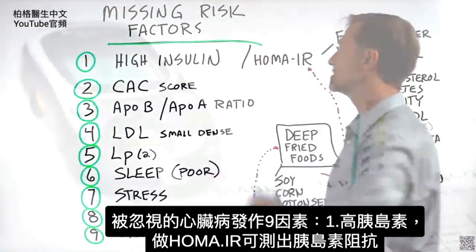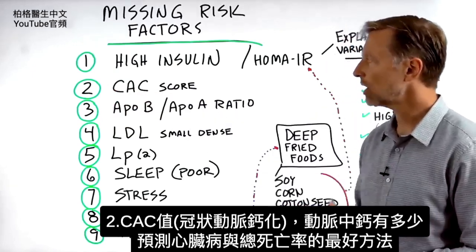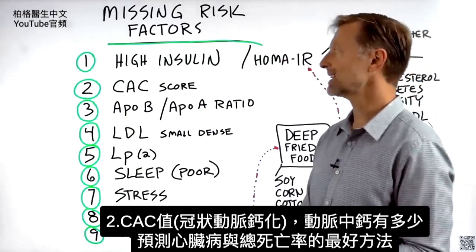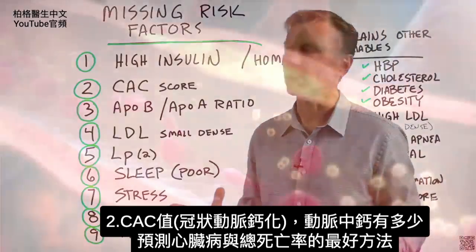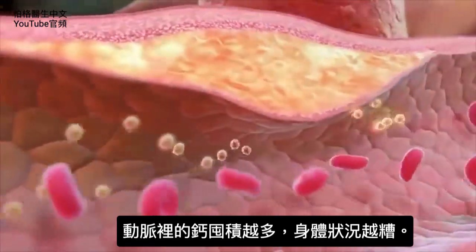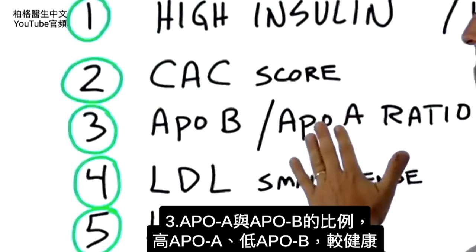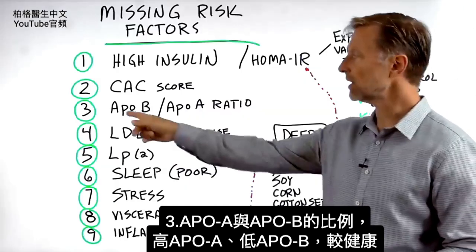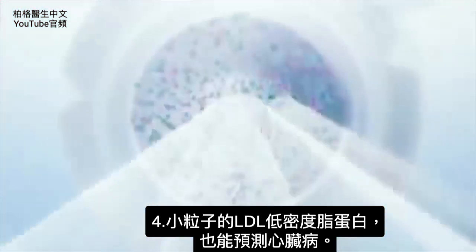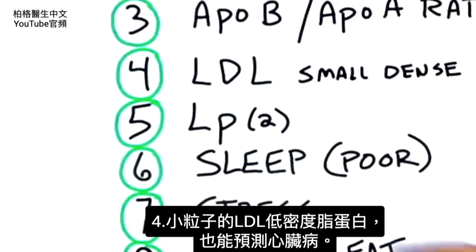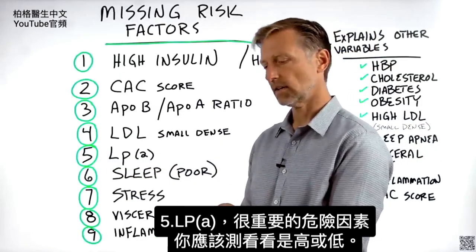Let's go through the missing risk factors that relate to heart attacks. Number one: high insulin, and a test for insulin resistance called HOMA-IR. Number two: a CAC score — coronary artery calcification score — which correlates to how much calcium is in your arteries, and that's one of the best predictors not just of heart attacks but of any reason for dying. The more calcium you have in your arteries, the worse shape you are in. Number three: your APOB to APOA ratio — you want high APOA and low APOB. This gives a very high statistical correlation and is predictive of heart attacks. Number four: LDL small-dense particles. And number five: LP(a) — a very powerful risk factor, and you should get a test done to see if yours is high or low.